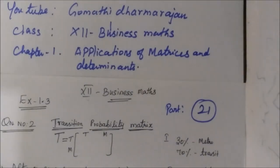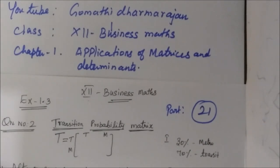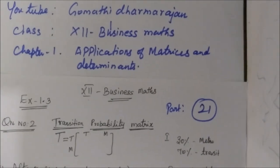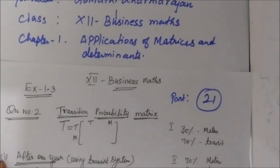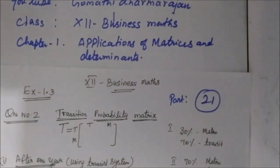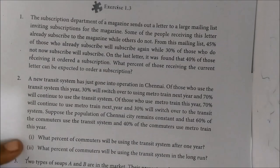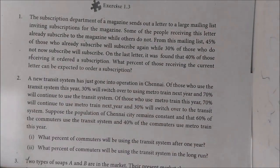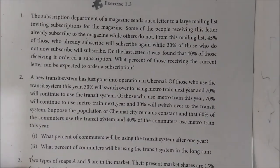Students, now we want to see 12th business class examples from the last video. Exercise 1.3, Question 2 is the Transition Probability Matrix. Here you are given — this is very simple, but it is important to see the question. It is very easy — Exercise 1.3.